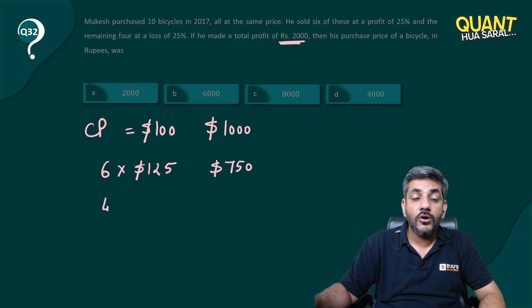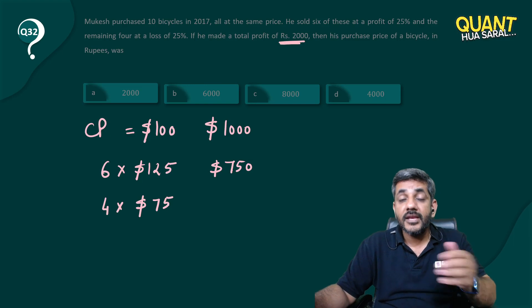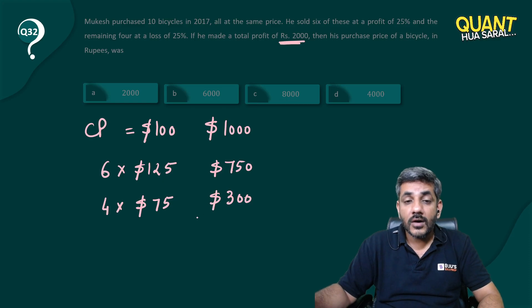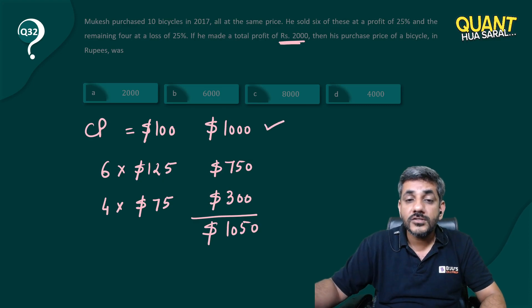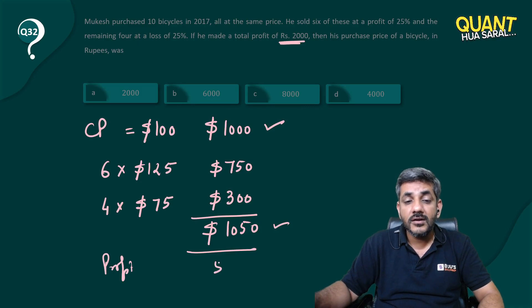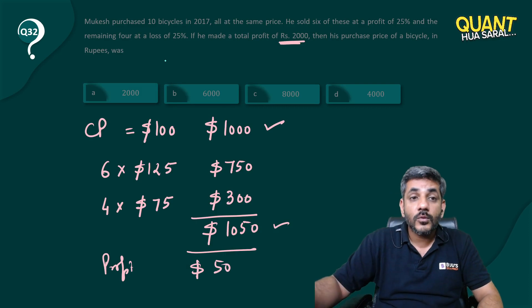The remaining four are sold at a loss of 25 percent, meaning for 75 dollars each, giving a total of 300 dollars. So the total selling price comes out to be 1050 dollars, whereas the cost was 1000 dollars. That means I have a profit of 50 dollars.